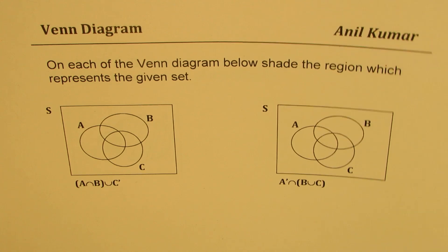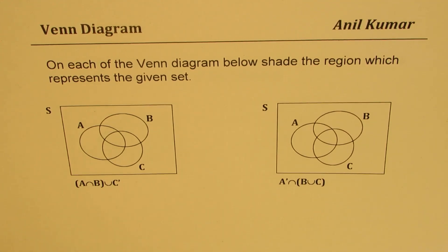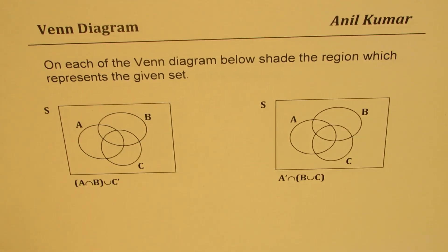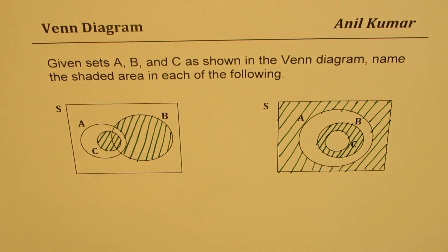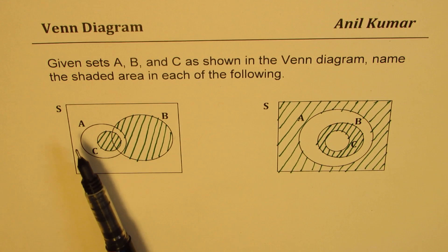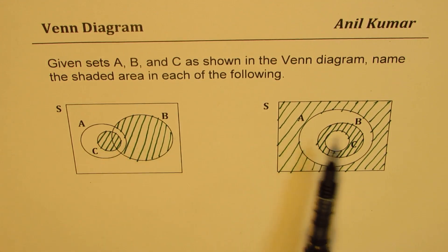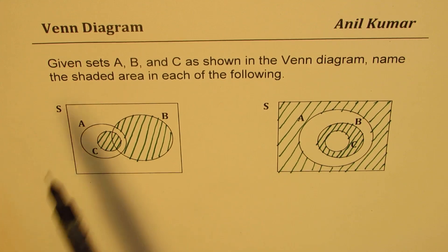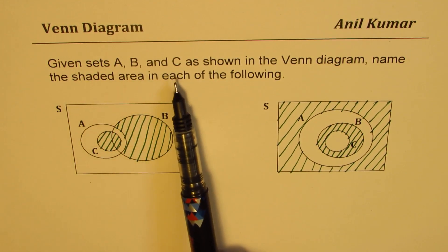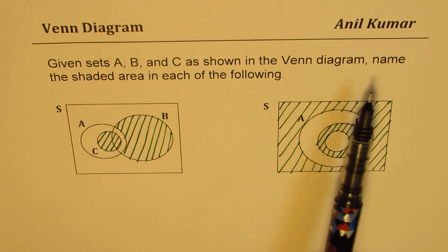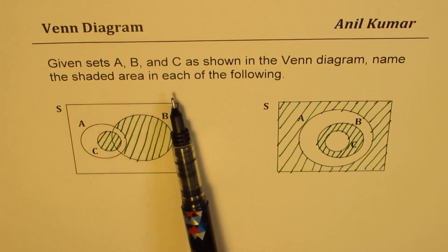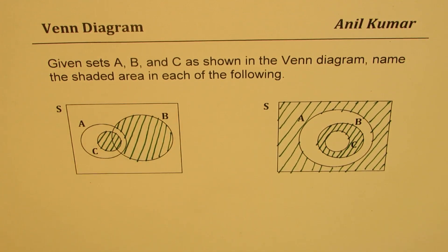Once you do the shading, we also have another question: we have already shaded two Venn diagrams where sets A, B and C are shown and that is the shaded portion. The question is: given sets A, B and C as shown in the Venn diagram, name the shaded area in each of the following. Have a good look at it and try to name the shaded area.